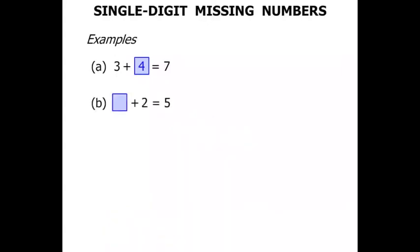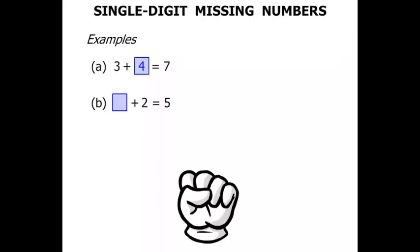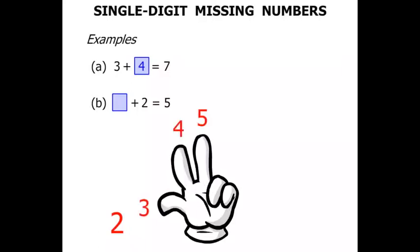The next one, something plus 2 equals 5. Okay there's our hand. Let's start with the 2. We need to add something to that to get 5. So we've already got 2 in our mind. Then 3, 4, 5. So to get to 5 we needed to add another 3.